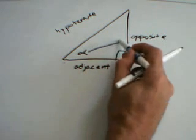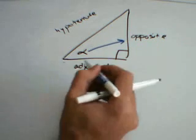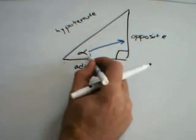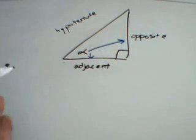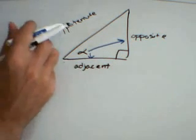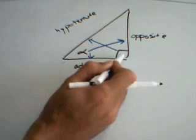The side that is opposite that angle would be this side. The side that is adjacent to that angle would be this side. And then the hypotenuse in a right triangle is always opposite from the right angle.